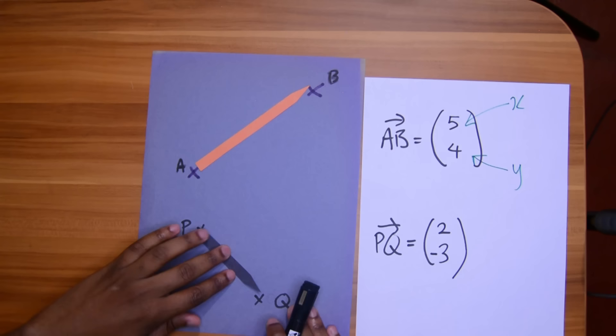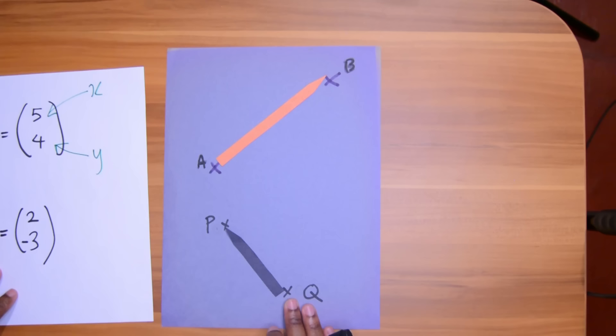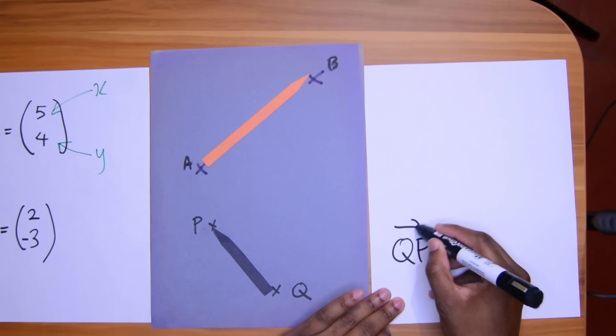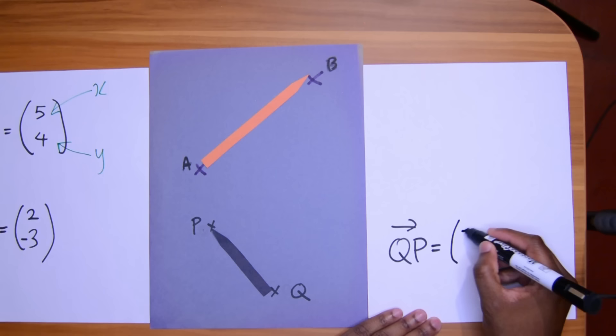How about if I turn around this one? This becomes vector QP. Let's see what vector QP will be. Vector QP would mean that I'm going to the left, 2 units, and I'm going up 3.